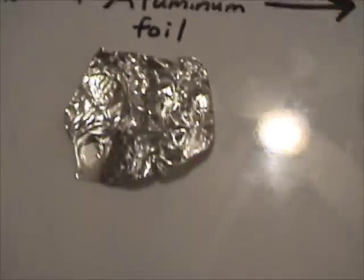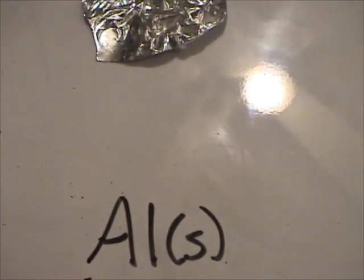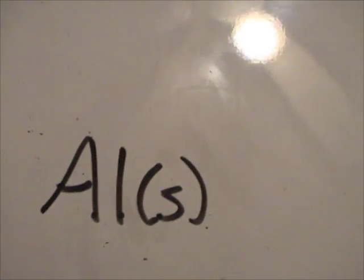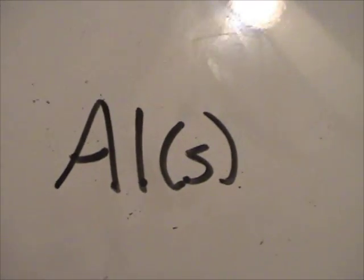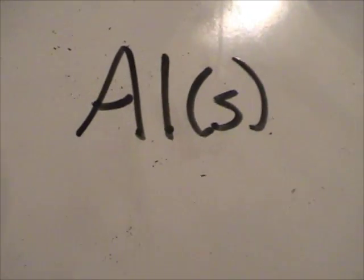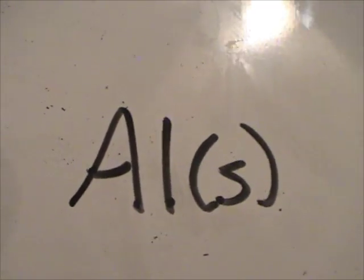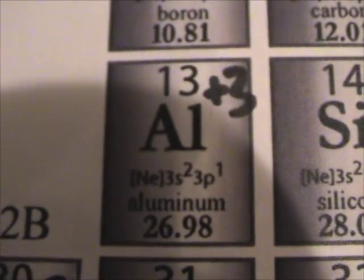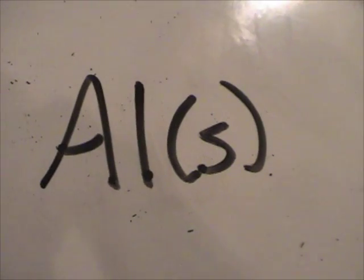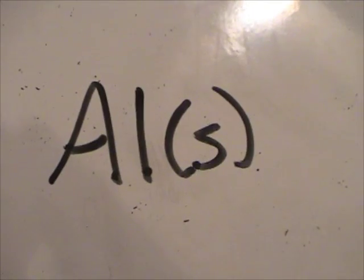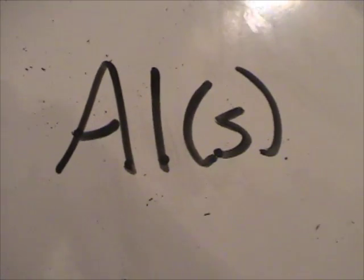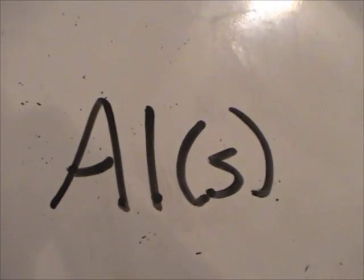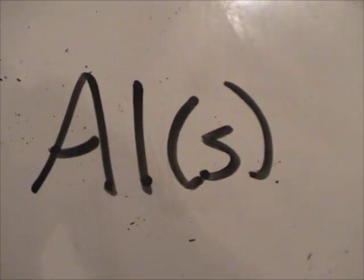So now aluminum foil. Aluminum foil just has a formula of Al solid. That means it's in the form of its element. Aluminum foil is just aluminum element. That means all of the atoms have the same number of protons corresponding to aluminum. So now we need to look at the periodic table. Aluminum has 13 protons. So when we say aluminum solid, that means you've got a whole bunch of atoms shoved together that all have 13 protons. They also have 13 electrons to make it a neutral atom.